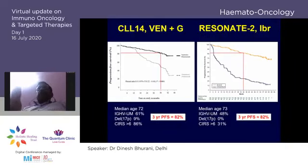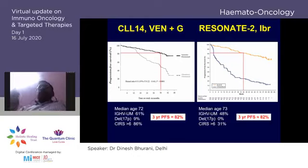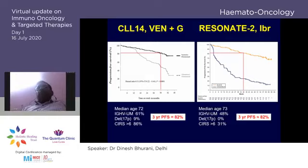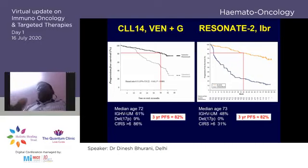Comparing indefinite ibrutinib therapy versus time-limited venetoclax plus obinutuzumab: the three-year progression-free survival is approximately equal at around 82%, despite venetoclax being used for only one year. So at least at the three-year mark, venetoclax plus obinutuzumab appears equivalent to continuous ibrutinib.